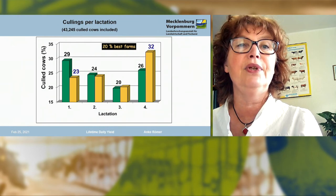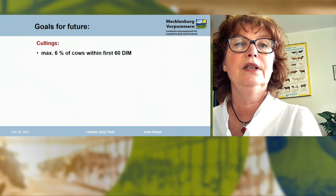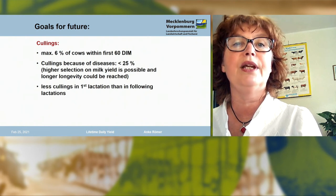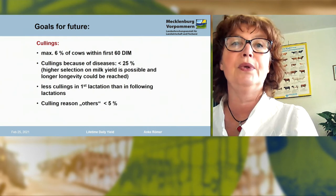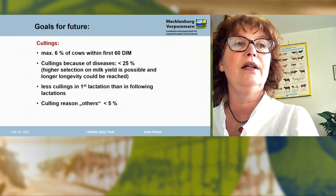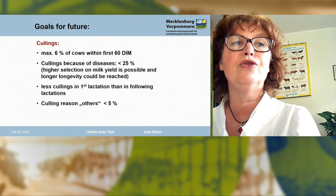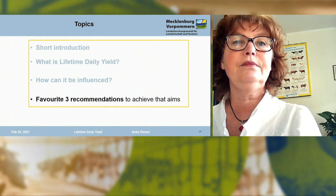Here you can see the green bars — they describe all farms — and the yellow ones, the 20% best of them. They had less cullings in first lactation, but more in fourth and following lactations. The goals for the future: do not cull more than 6% of cows within the first 60 days of milk. Cullings because of diseases should be less than 25%, and culling reason 'others' less than 5%.